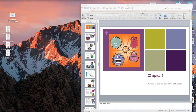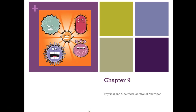Hello everyone and welcome to your chapter 9 screencast which is on physical and chemical control of microbes. We want to really dive into how we are controlling these microorganisms within our world and figure out the degree of exposure we have to them, especially the ones that are potentially harmful or pathogenic, which are going to be the most concerning.